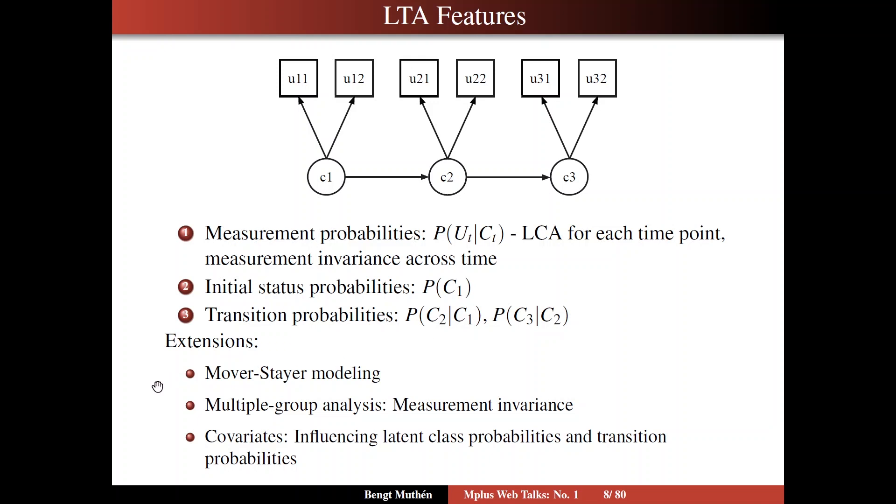There are extensions, for instance, to mover-stayer modeling, where stayers is a latent class variable, really, with two categories, so one more latent class variable, where the stayers are individuals who will remain in the same class at the next time point, with probability one. So the diagonal elements of the transition matrix are ones, and the off-diagonal are zero. You have zero probability of transitioning.